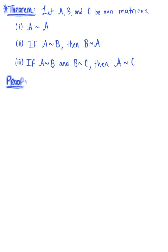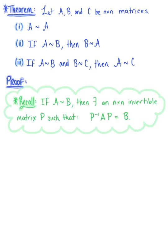Here we have the first theorem of this section. In this theorem, we let A, B, and C be n by n matrices. Property 1 says that matrix A is similar to matrix A. Property 2 says that if matrix A is similar to matrix B, then matrix B is similar to matrix A. Property 3 says that if matrix A is similar to matrix B and matrix B is similar to matrix C, then matrix A is similar to matrix C. As we begin the proof for each property, we want to keep the definition of similarity in mind.